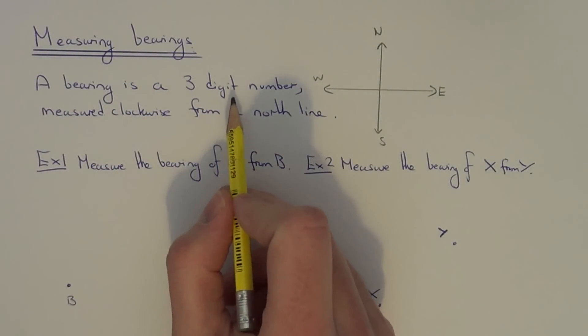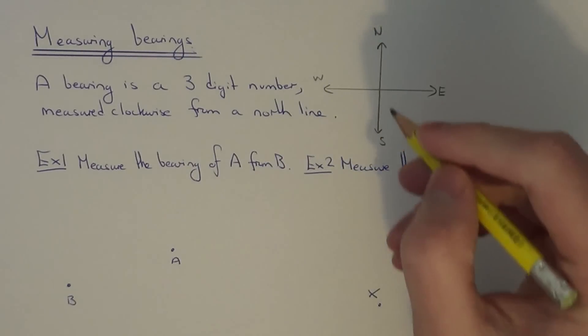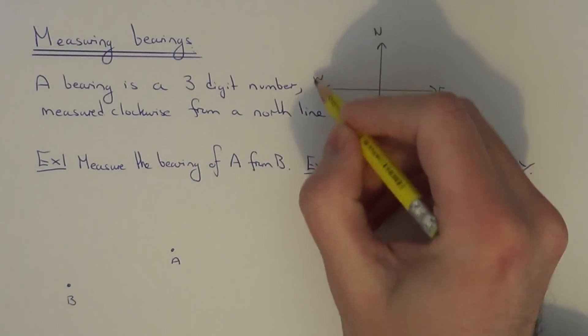A bearing is a three digit number measured clockwise from a north line. So bearings have a lot to do with compass directions.